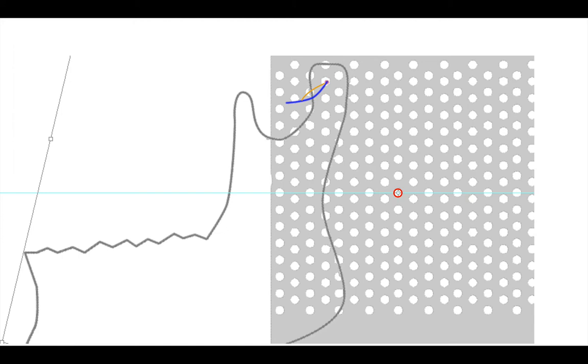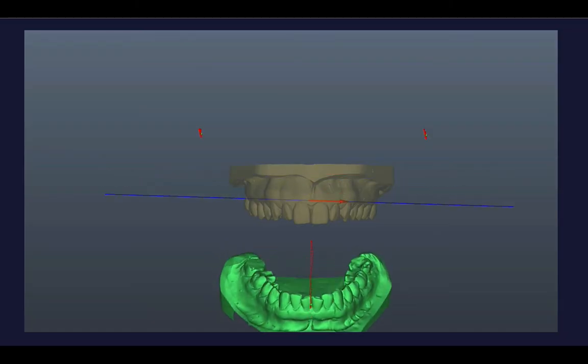This is the reason why it is never a good idea to change the vertical dimension in an articulator which is a pure rotation and it will not reproduce this combined movement.